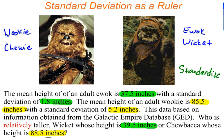Alright, let's come back to our problem now. We're trying to figure out the mean height of an Ewok. An adult Ewok is 37.5 inches with a standard deviation of 1.8 inches. The mean height of an adult Wookiee is 85.5 inches with a standard deviation of 5.2 inches.